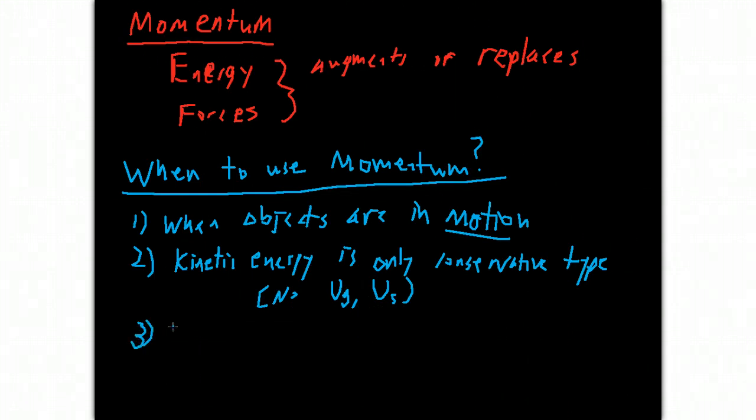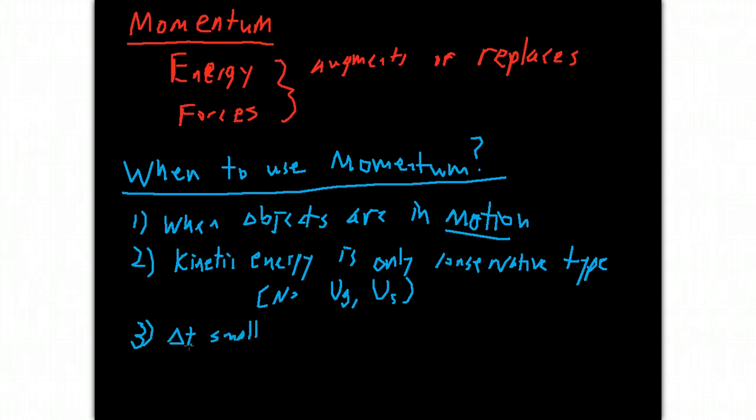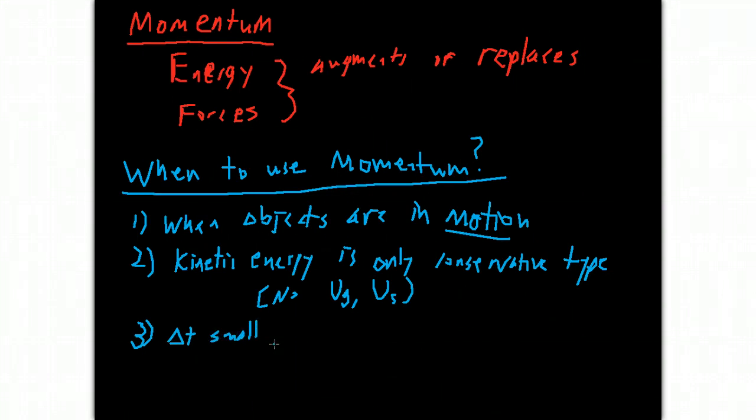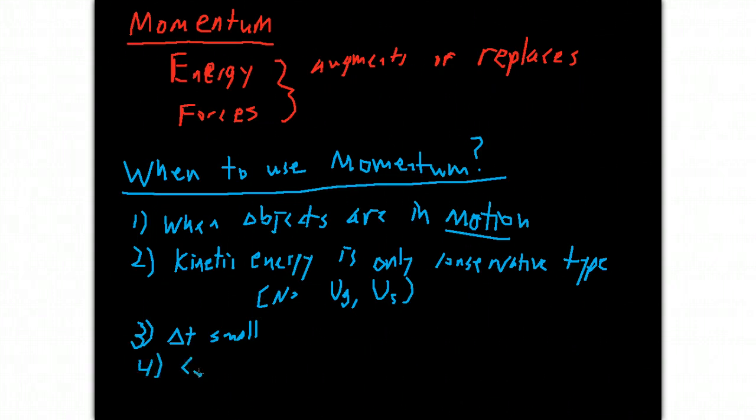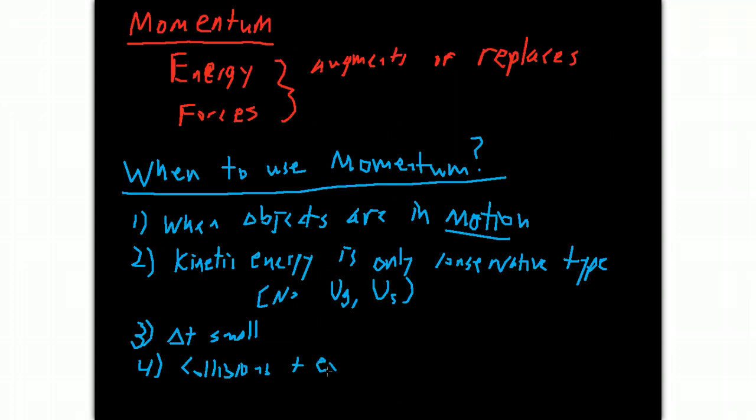Another time when kinetic energy is very useful is when delta T is small. So if the time frame over which we're talking about is very small, then momentum is really a good tool to use because it doesn't care if you can't see what's really happening during the collision.